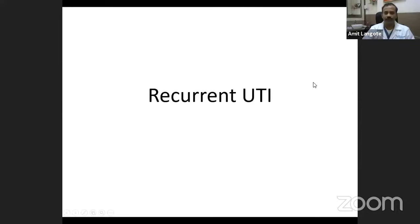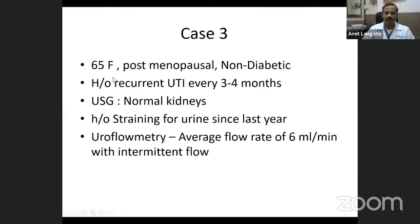Coming to recurrent UTI: a 65-year-old postmenopausal, non-diabetic female came with a history of recurrent UTI every 3 to 4 months. Ultrasonography showed normal kidneys and bladder. She had a history of straining for urine since the last one year. Uroflowmetry done outside showed a moderate to poor flow rate with an intermittent flow pattern.